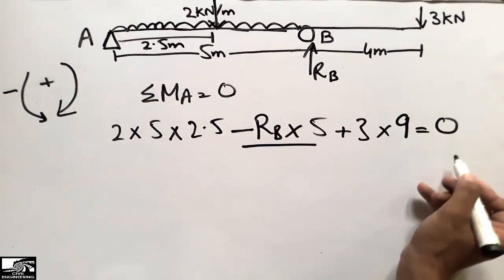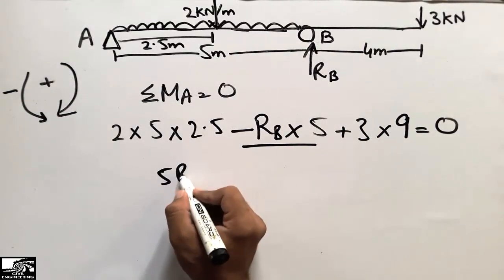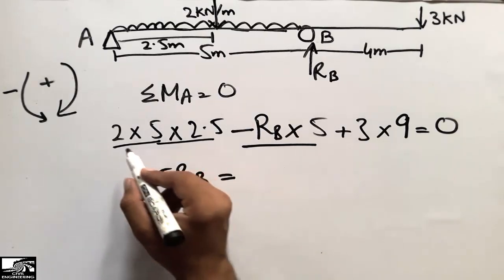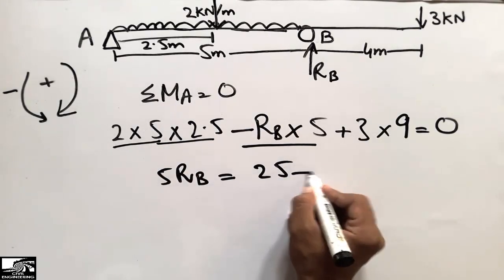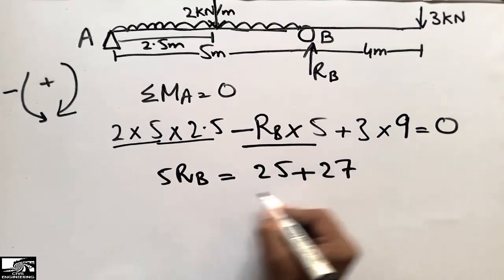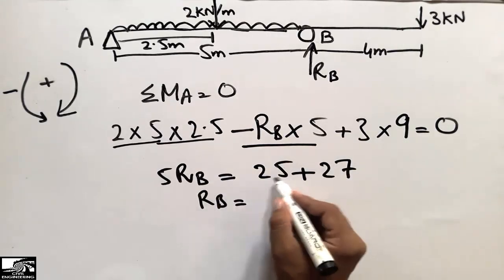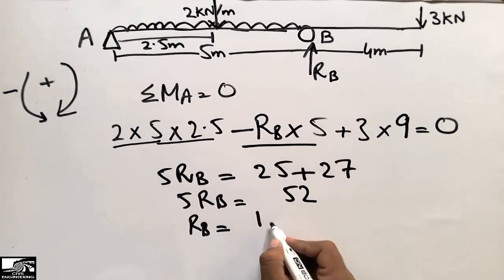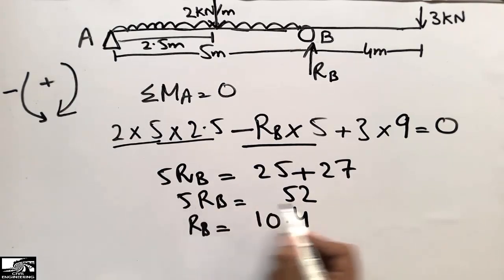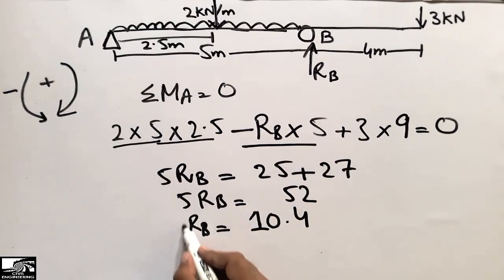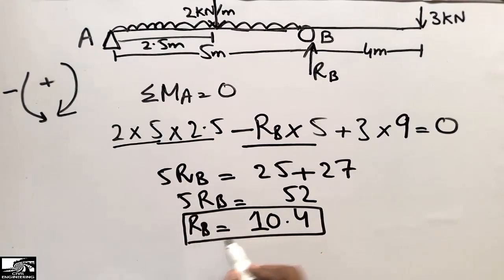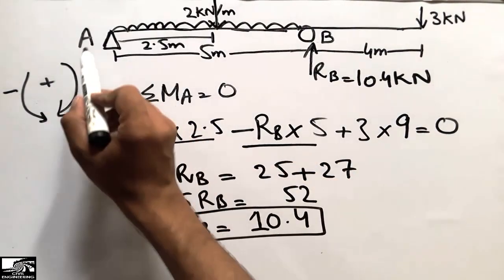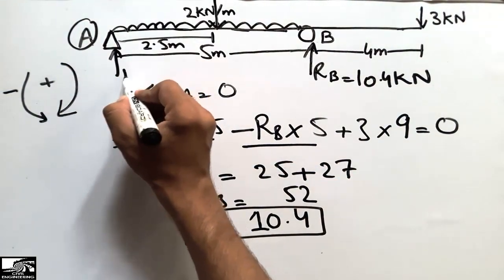Transferring terms to the right side: five RB equals two into five into 2.5, which is twenty-five, plus three into nine, which is twenty-seven. That gives fifty-two. Dividing fifty-two by five, RB comes out to be 10.4 kilonewtons.